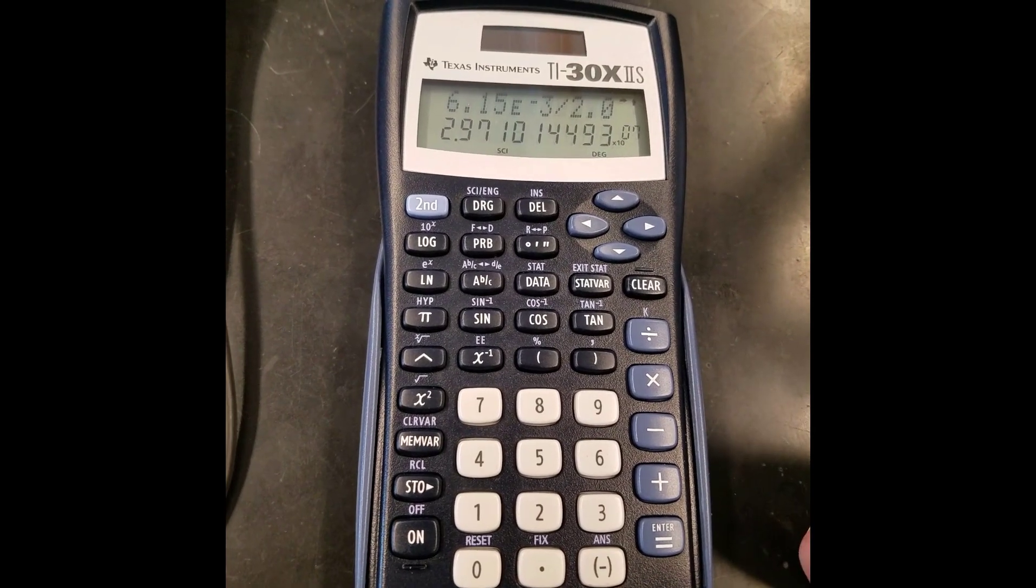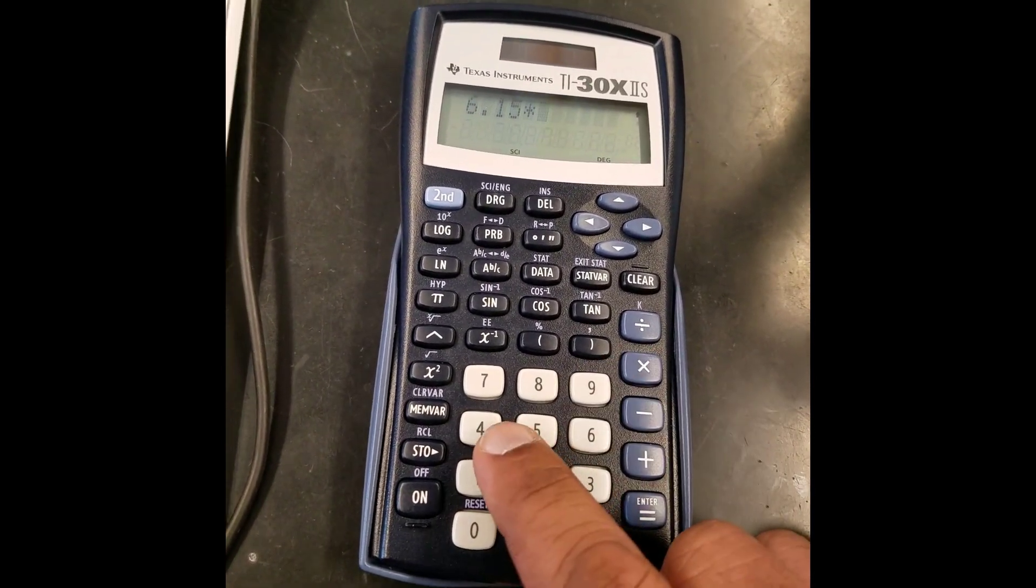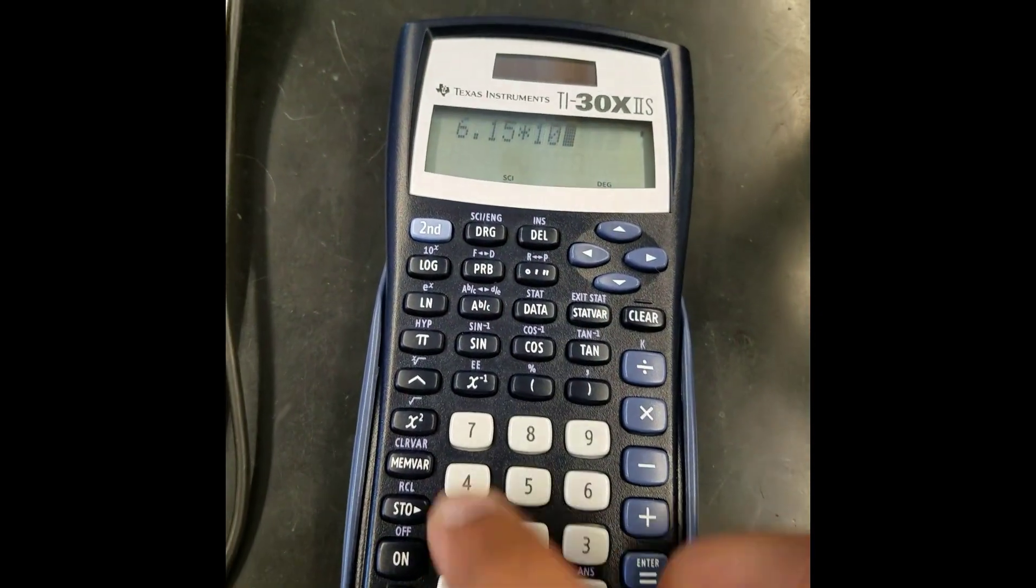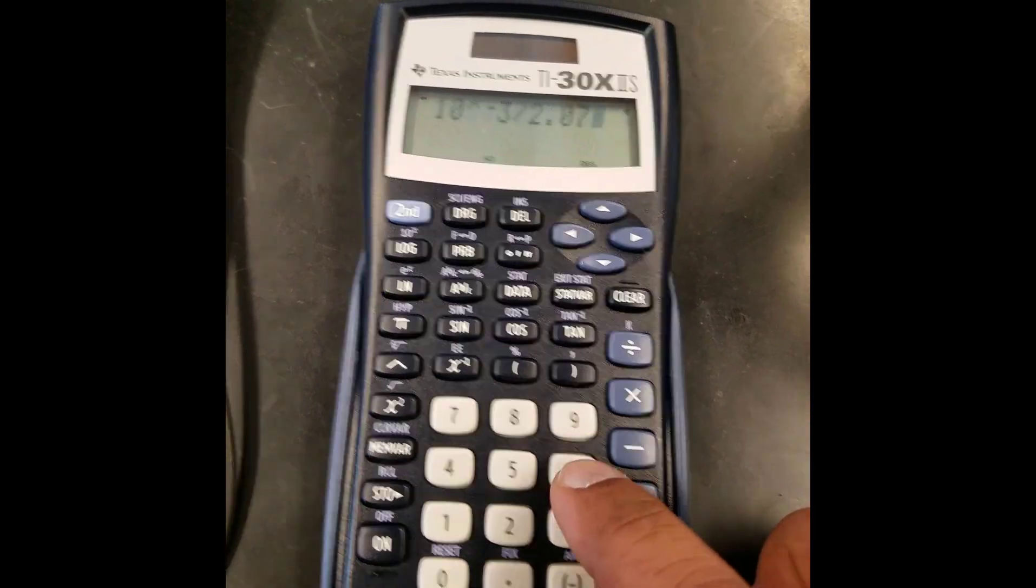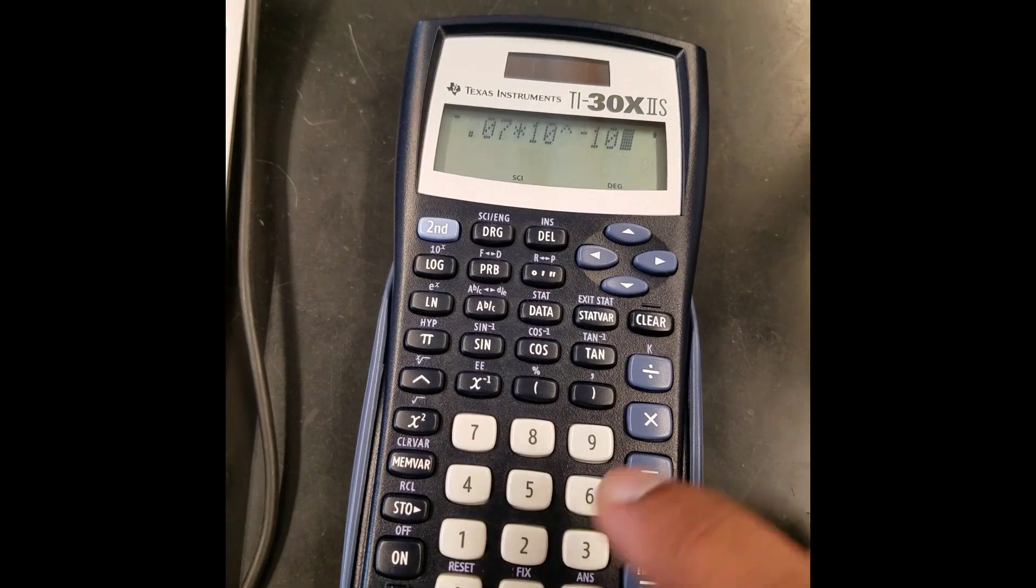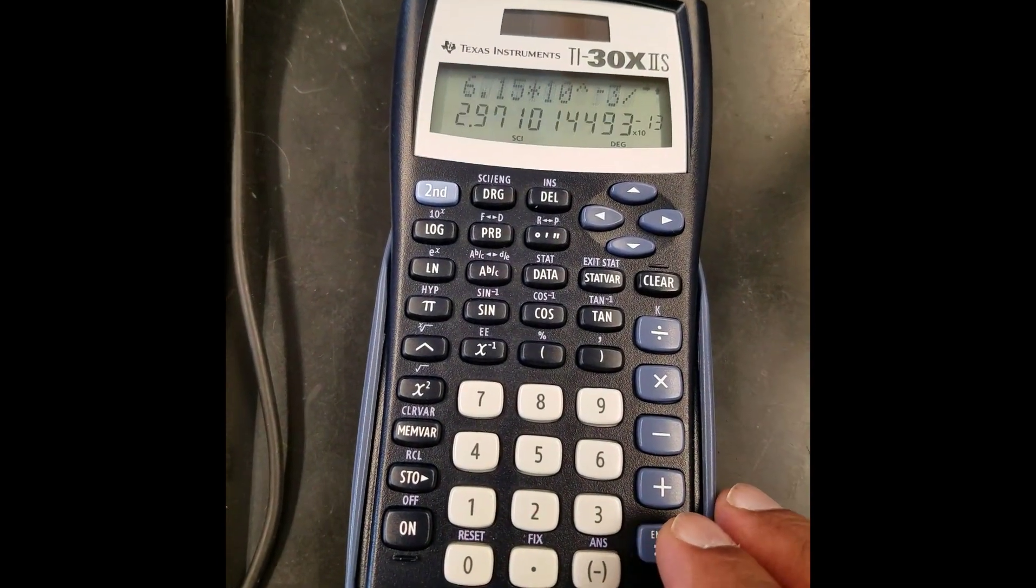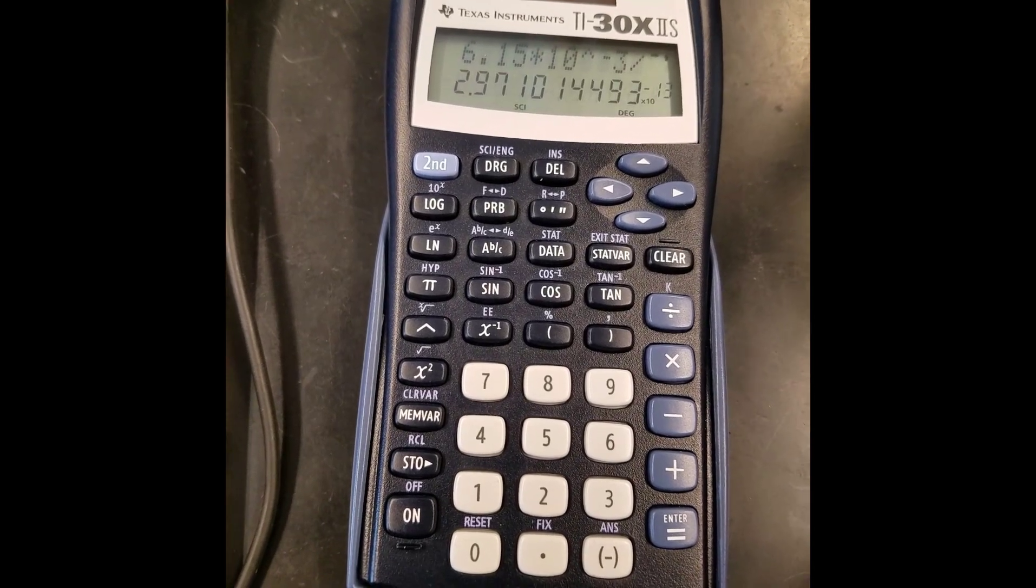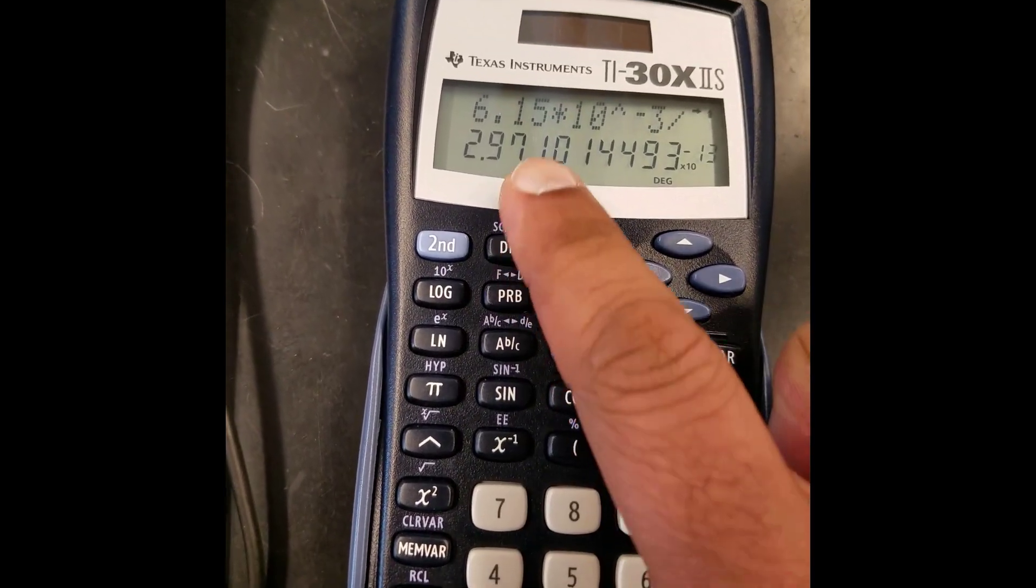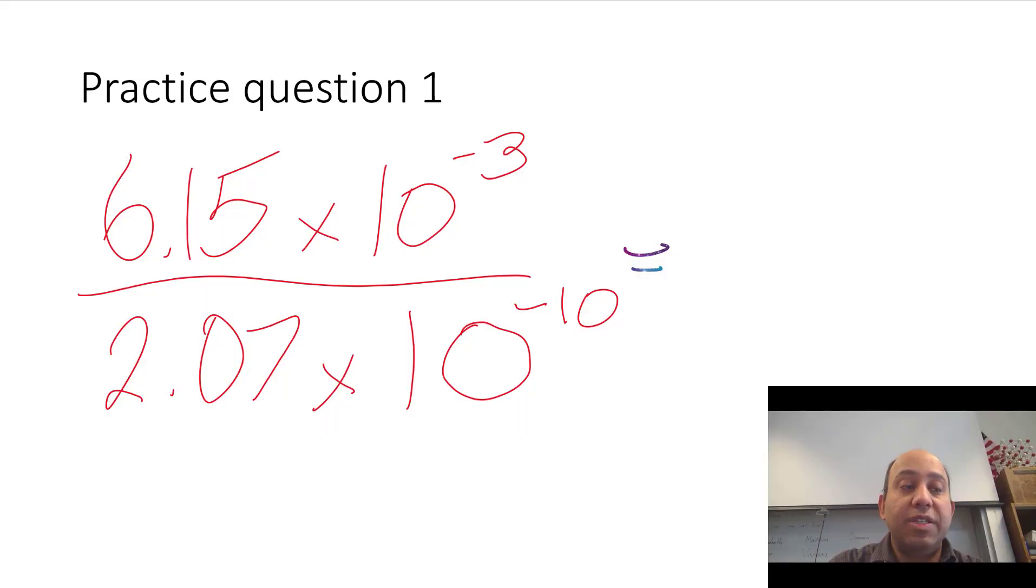So if you do it wrong, if you use the other method, 6.15 times 10 with a carat negative 3, and then you divide that by 2.07 times 10 with a carat negative 10. Notice how I didn't use parentheses. It's going to move this 10 to the negative 10 to the top of the fraction. And it's going to give you a totally different answer. Notice, the answer is 2.97 times 10 to the negative 13. So you're actually many zeros off. We're about 20 zeros, 20 factors of 10 off of the correct answer. That's why you don't use this method. Extra button presses lead to mistakes. So the answer is 2.97 times 10 to the positive 7.